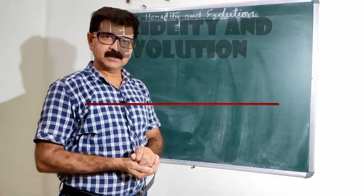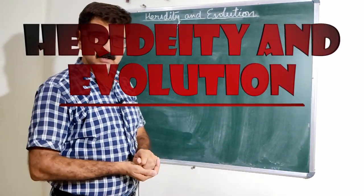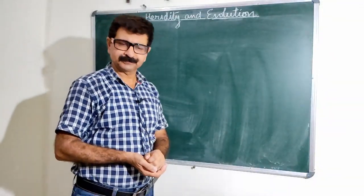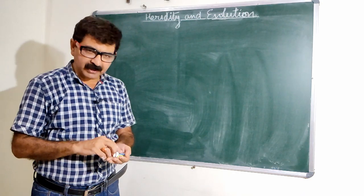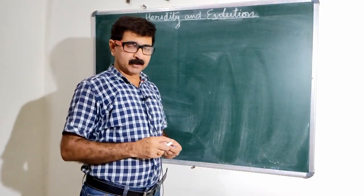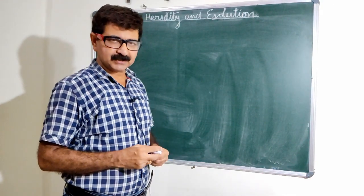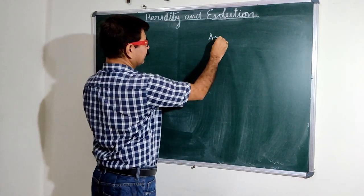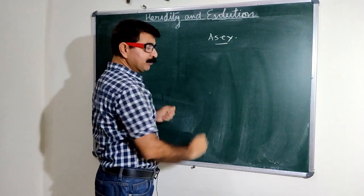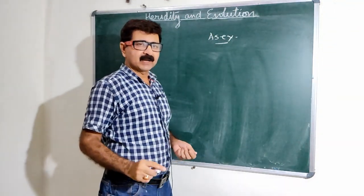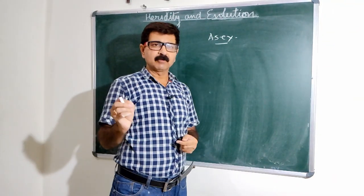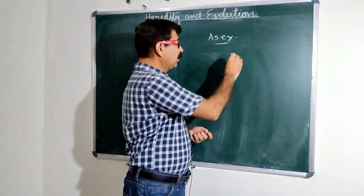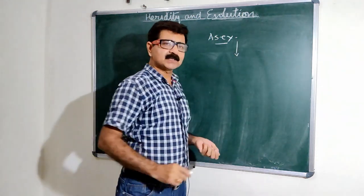Today we are going to discuss the chapter Heredity and Evolution. As we have discussed earlier about sexual reproduction, we are aware that if an individual reproduces asexually, it contains very less variation from its offspring — the appearance has more similarities.